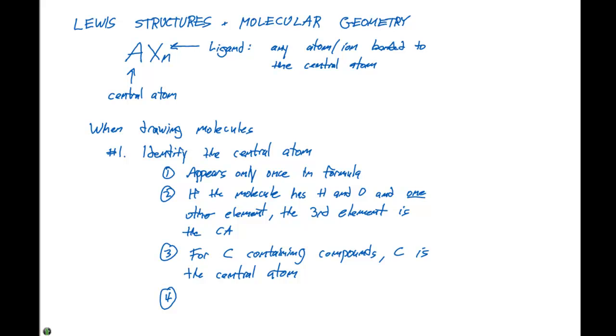Lastly, if you can't identify the central atom from these four steps, the central atom is the least electronegative. And this is typically because it has to share its electrons with more than one species. So if you have a highly electronegative atom, it's not going to want to share its electrons as much. So it's going to be a ligand rather than a central atom.